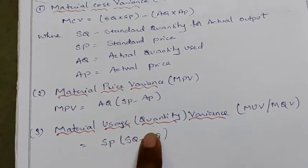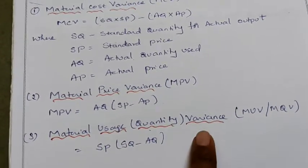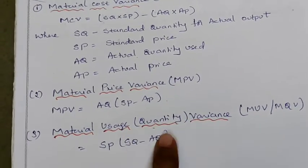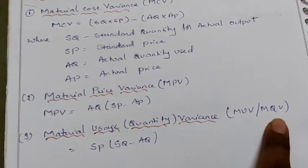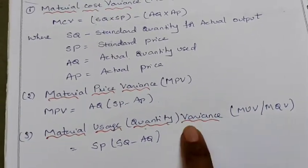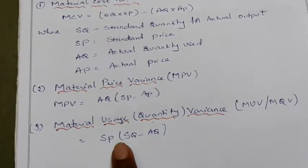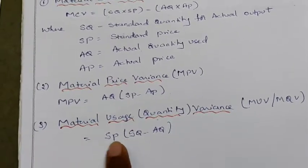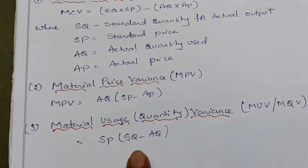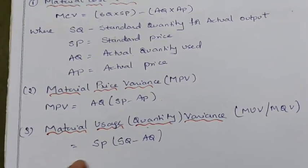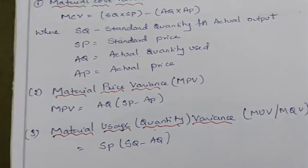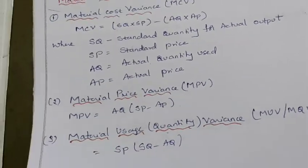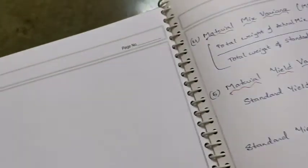Next, material usage or quantity variance — we can call it MUV or MQV. The formula is: Standard Price × (SQ − AQ).